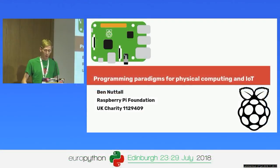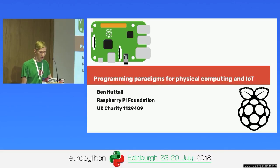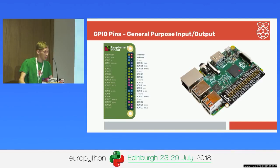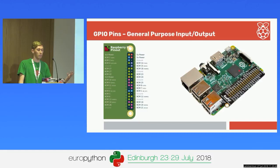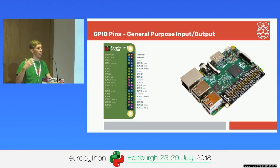Hi everyone, I'm Ben. I work for the Raspberry Pi Foundation. This talk is kind of an idealism based on an existing library for the Raspberry Pi, and I want to see the idea of it being taken further and moving forward into other areas. The Raspberry Pi is a single-board computer that provides you a set of GPIO pins. These pins allow you to connect up to electronics and real-world applications and devices, and they're a simple interface to programming devices, reading values from sensors, and controlling things in the real world.